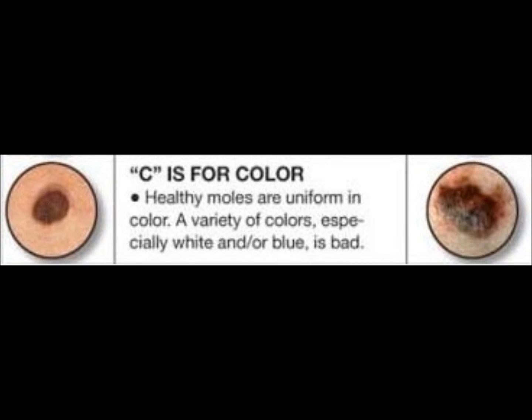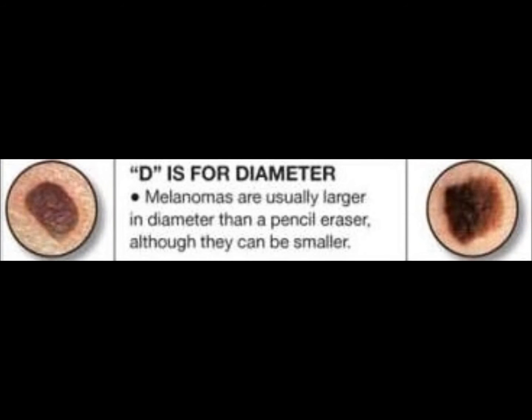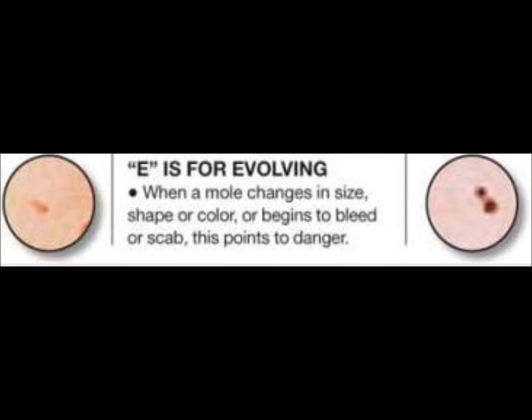C is for color — bad moles often have a very dark color, often black, or can even be multicolored. D is for diameter — bad moles are often 6 mm in size or larger. Finally, E is for evolution or changing of a mole — bad moles increase in size while other moles in the vicinity are not changing.